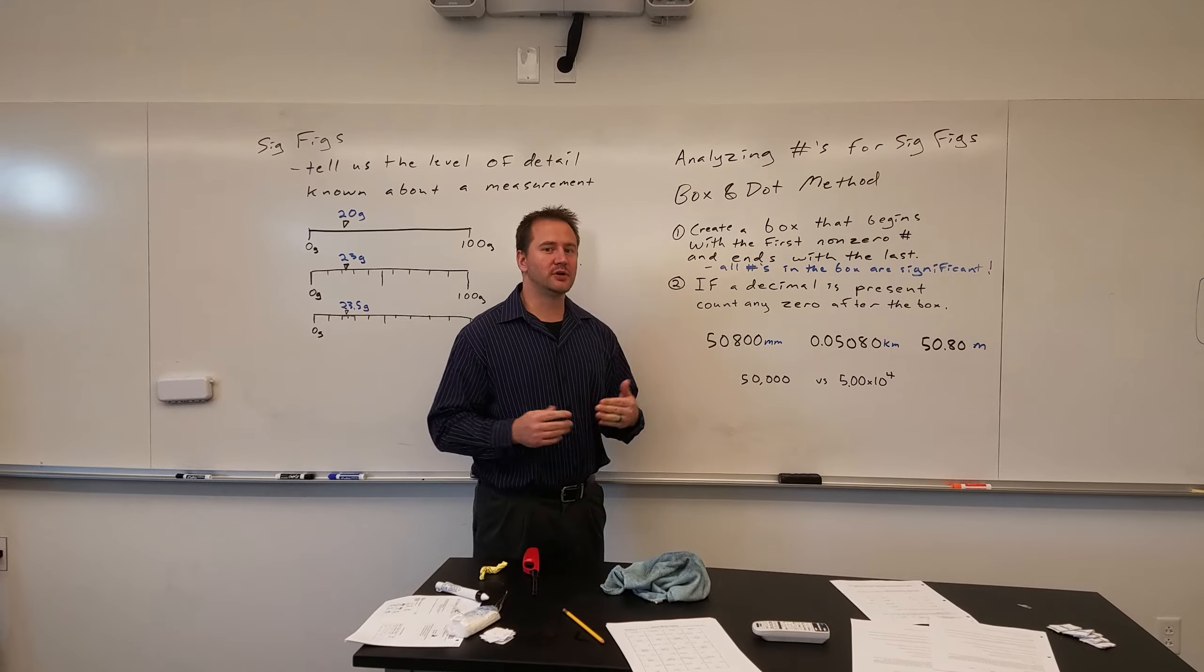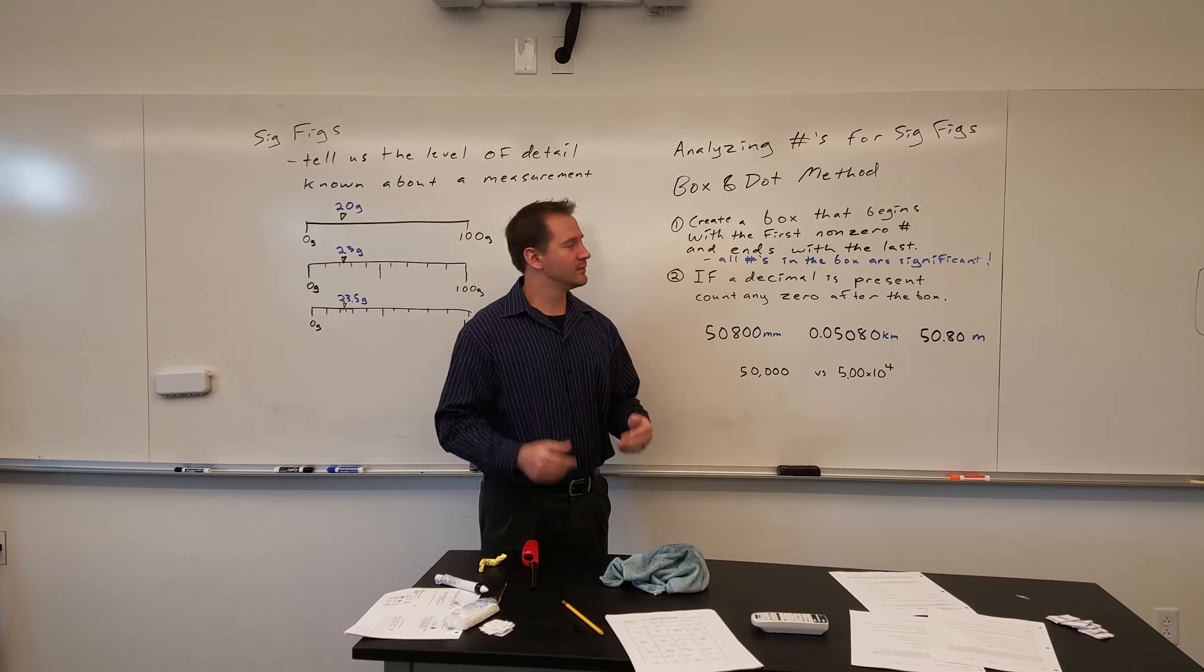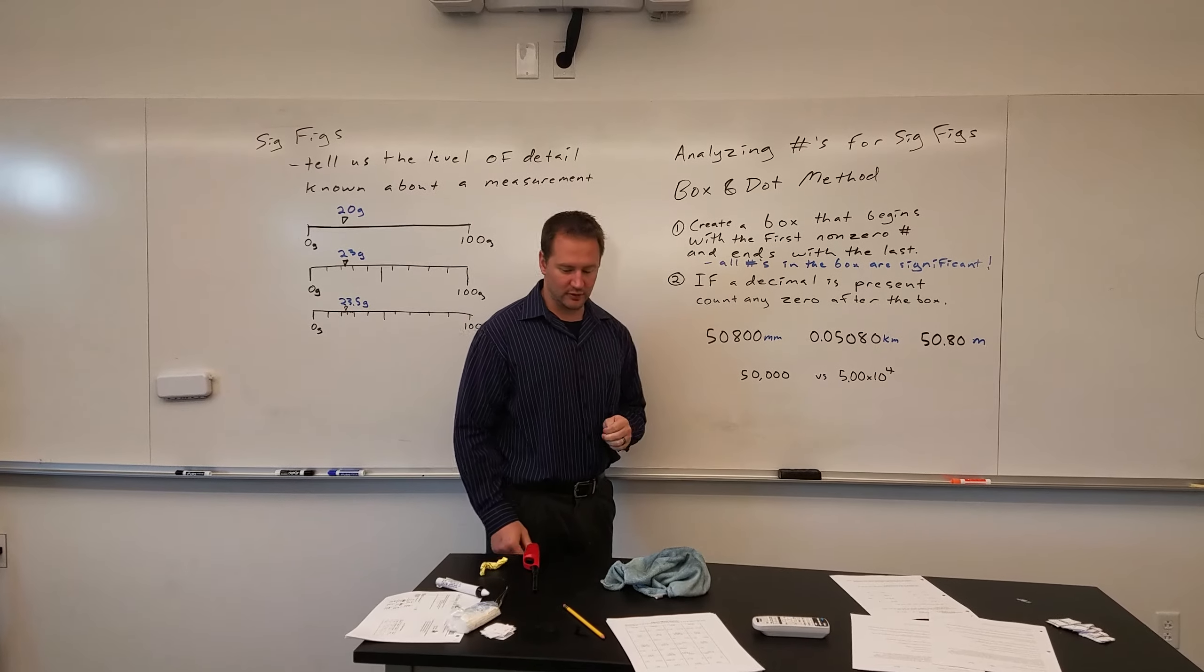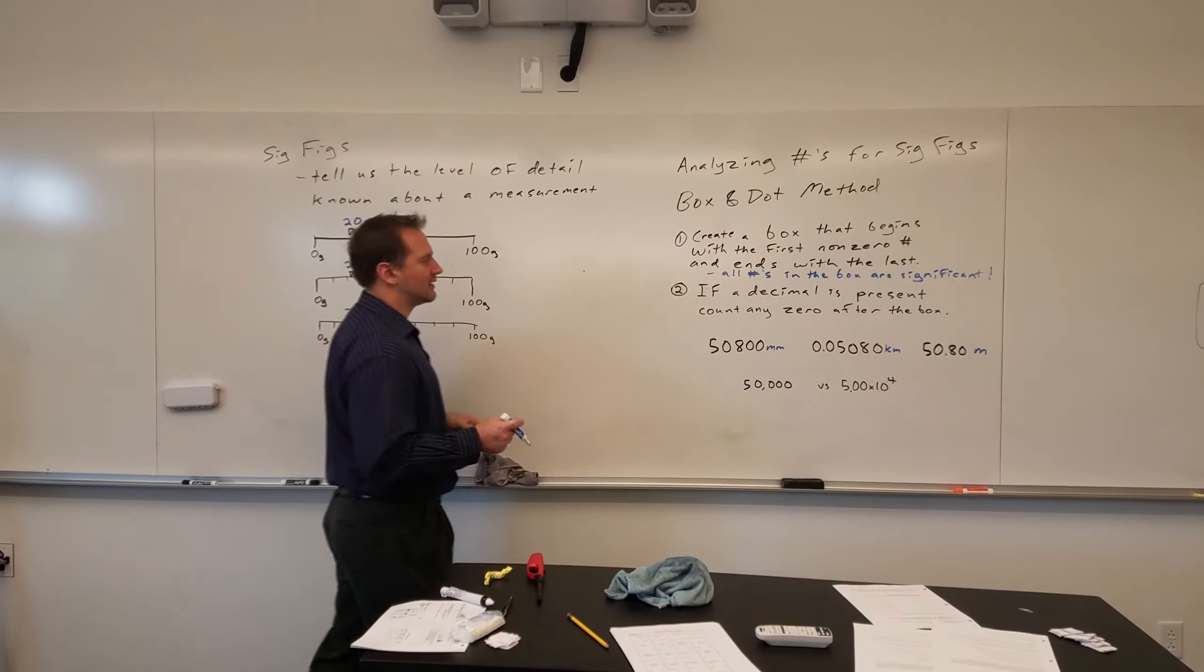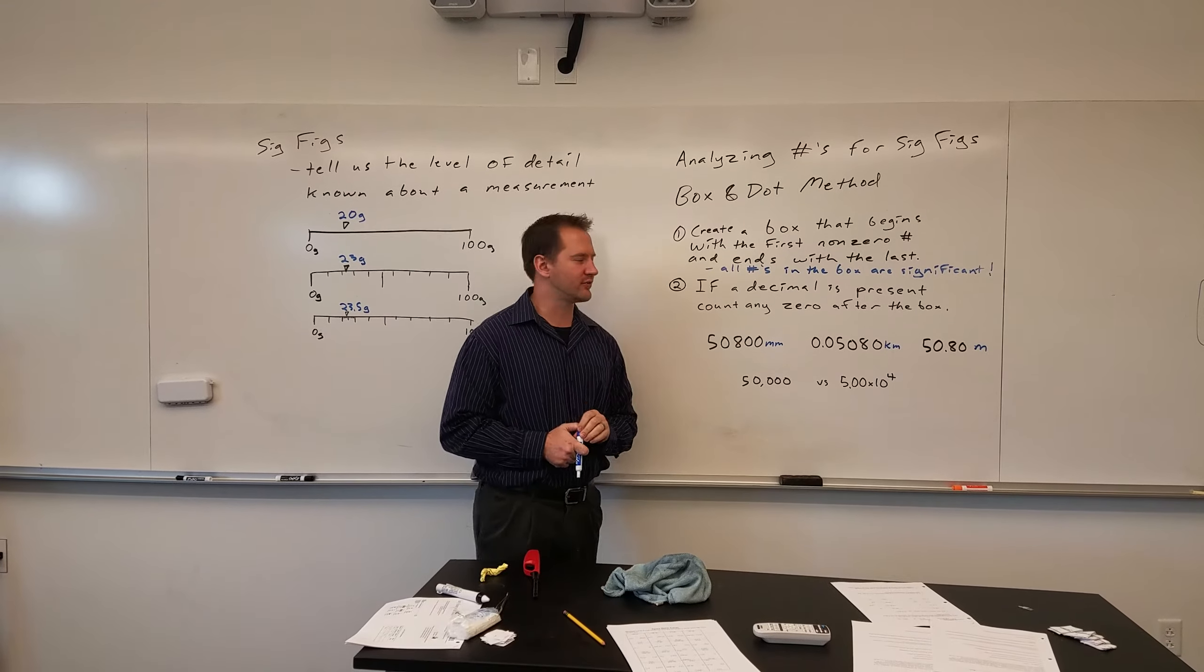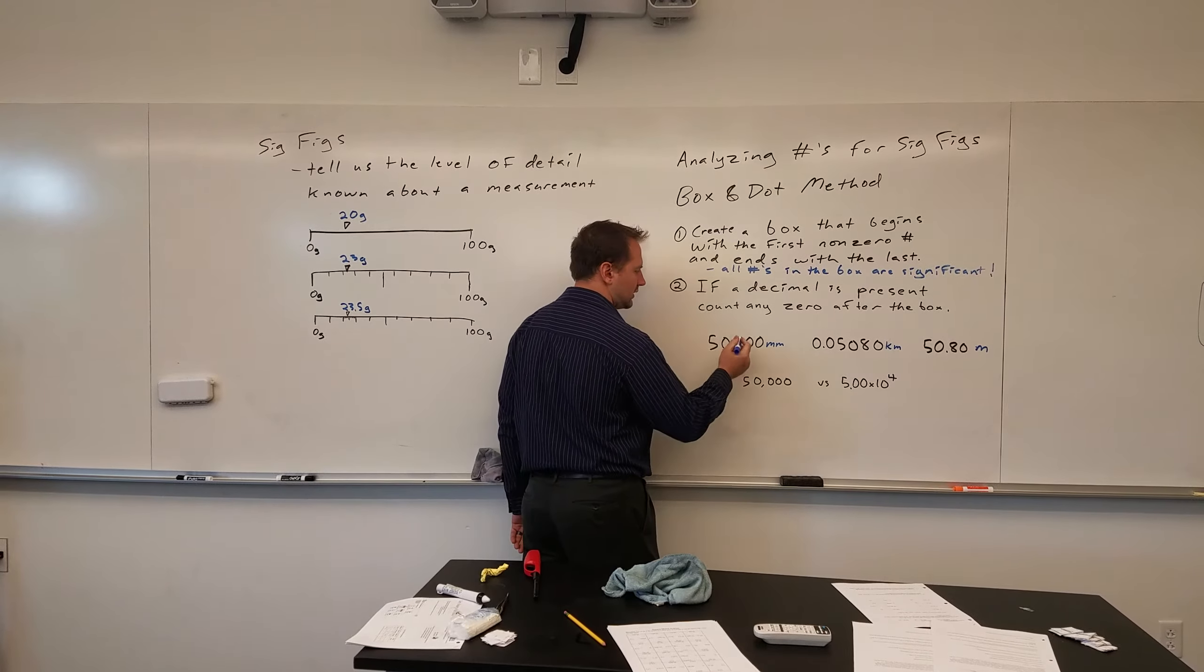So we're going to use the box and dot method this year, and it's pretty simple. So the first thing you do is create a box that begins with the first non-zero number and ends with the last. And anything within that box is significant. So let's look at these three numbers right here.